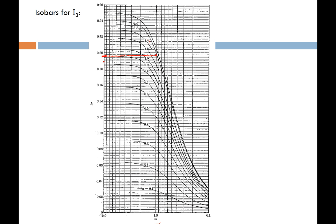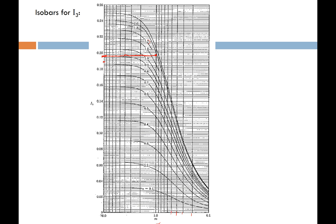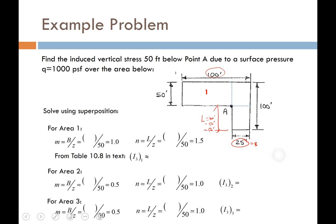Going to the chart with M = 0.5 and N = 1, where those intersect, the influence factor is approximately 0.120. Rectangle number 3 turns out to have the exact same dimensions as rectangle 2 — 25 feet and 50 feet — so it yields the same values of M and N and therefore the same influence factor.